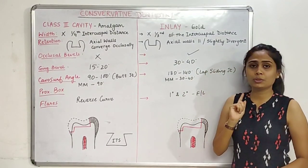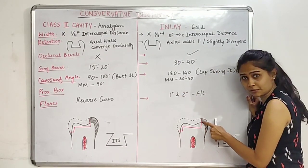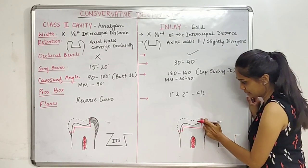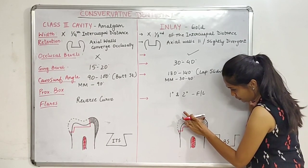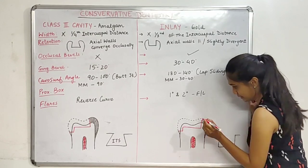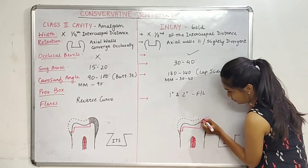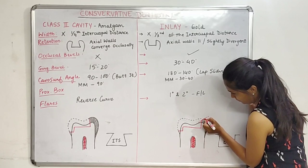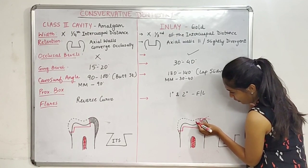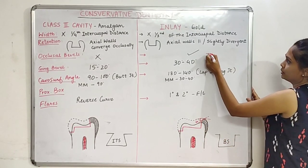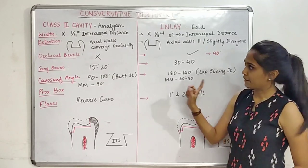For the occlusal bevel of the inlay cavity: if this is the occlusal surface with the enamel portion and cavity outline, we give a bevel removing a portion at the margin. The angle between our occlusal surface and the bevel should be 40 degrees. So for the inlay cavity, the occlusal bevel is 40 degrees.